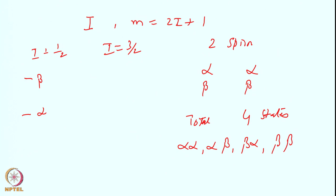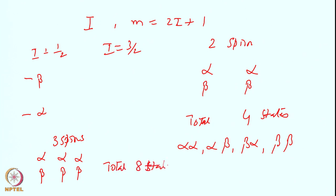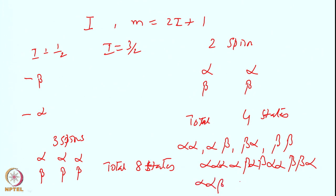This we have seen before when discussing spectral analysis. For 3 spins, all spin-1/2 systems: alpha-beta for each of three spins gives a total of 8 states — alpha-alpha-alpha, alpha-alpha-beta, alpha-beta-alpha, alpha-beta-beta, beta-alpha-alpha, beta-alpha-beta, beta-beta-alpha, and beta-beta-beta. So, total of 8 states.